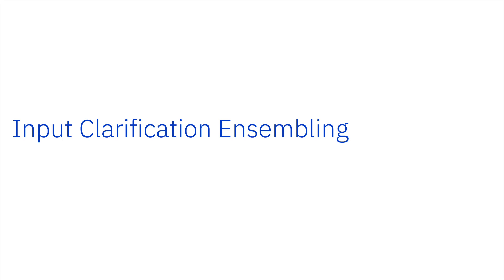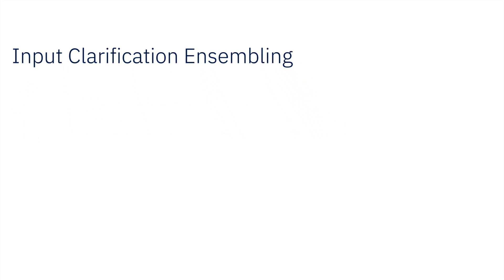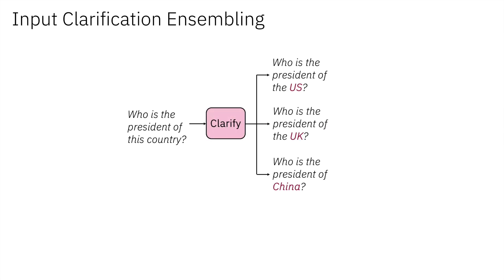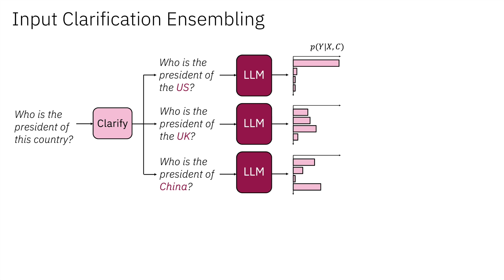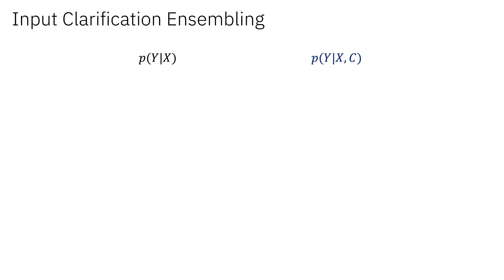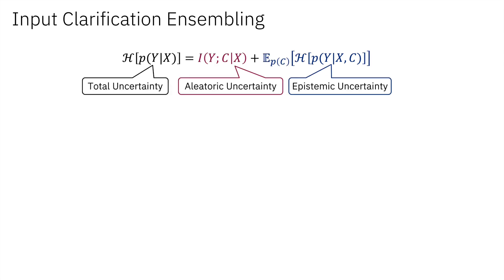Input clarification ensembling is also an ensemble method. However, instead of ensembling models, we ensemble different model inputs. Specifically, given an input query — potentially ambiguous — we first feed it into a clarification LLM, which generates multiple clarifications. Each clarified input is then fed into the same LLM to generate an output distribution, which is then aggregated to generate the final output distribution. The final output distribution can be connected with the output distribution for each input via the same identity, with a similar correspondence between each term and the different types of uncertainties.